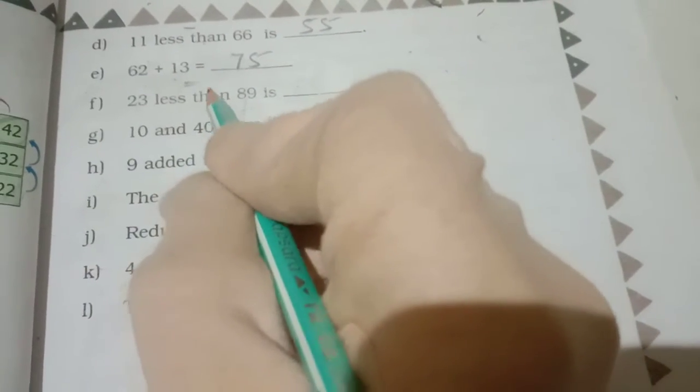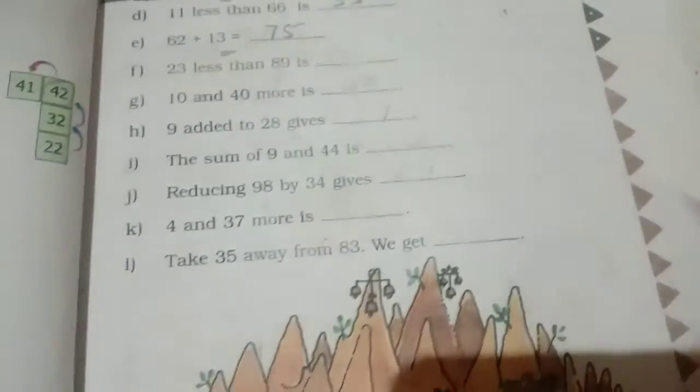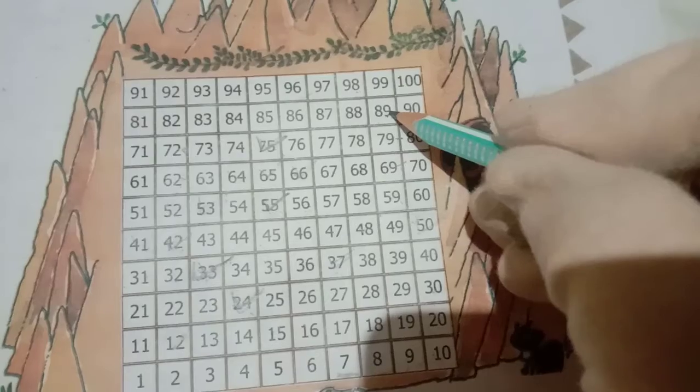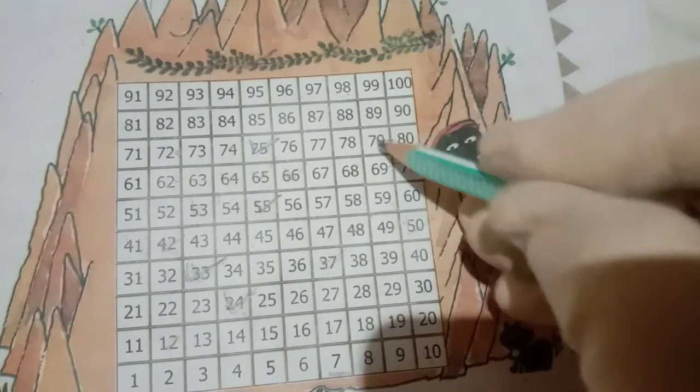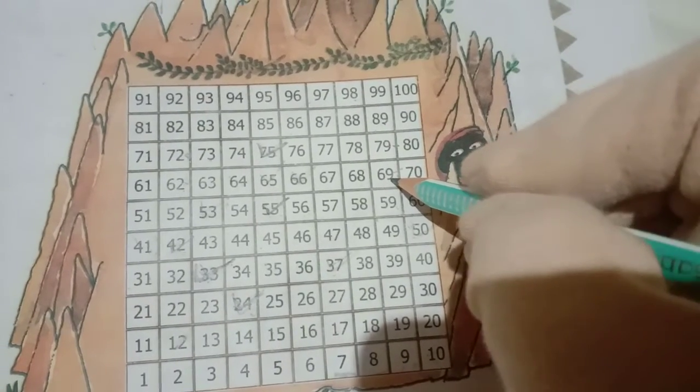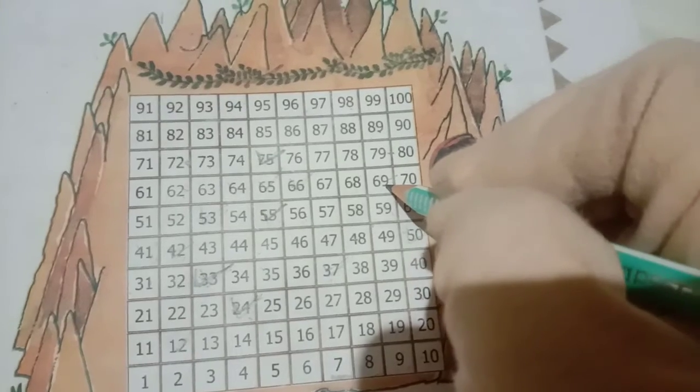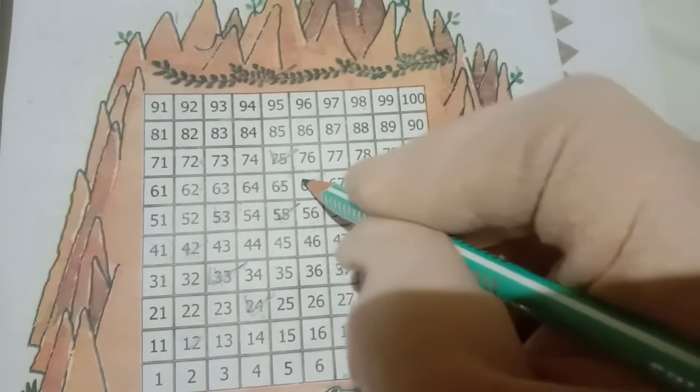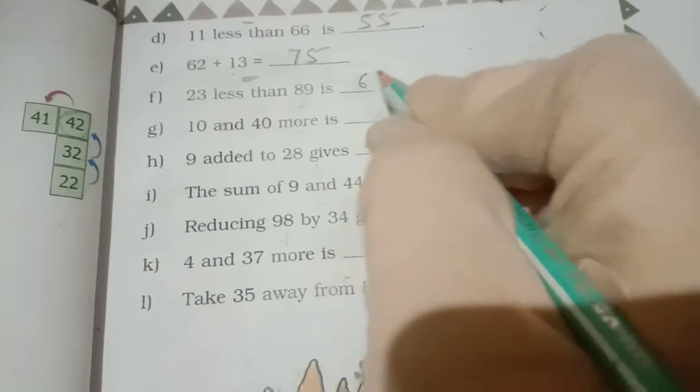Now our question 23 less than 89. Less than means minus, 89 minus 23. So we have to go in 89. And 2 steps down. 1, 2, 69. That's 69. We go to 3 steps left side. 1, 2, 3. So answer will get 66. Write in here answer 66.